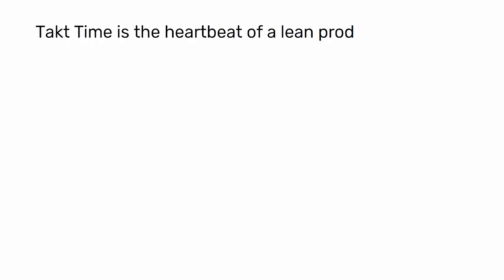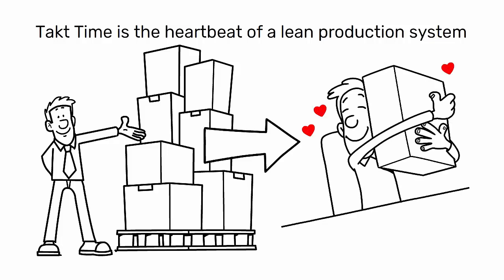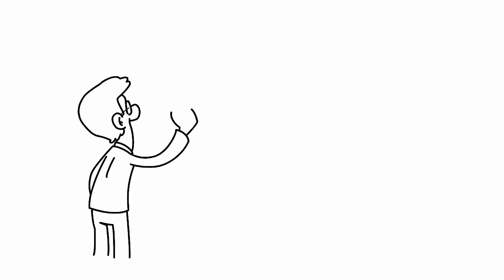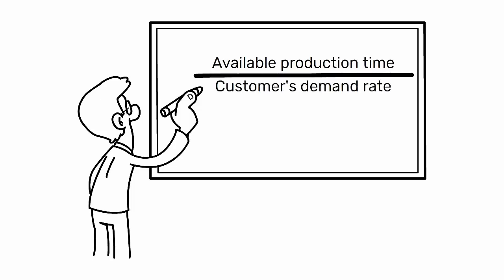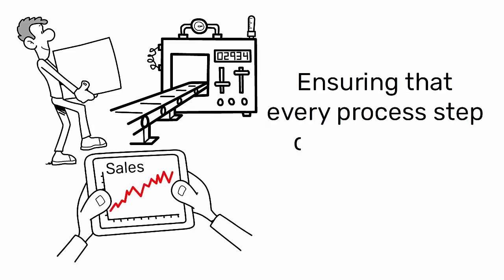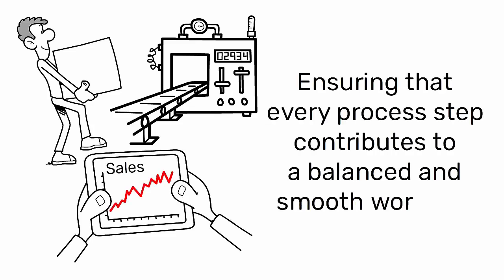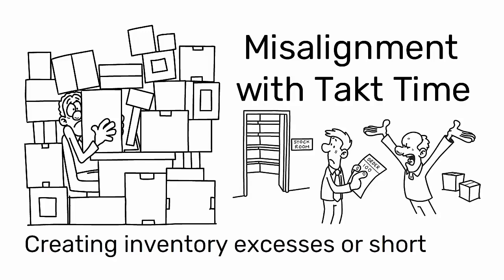Takt Time and its impact on capacity. Takt Time is the heartbeat of a lean production system, dictating the pace at which products must be completed to satisfy customer demand. It is calculated by dividing the available production time by the customer's demand rate. Takt Time is critical for aligning production with sales, ensuring that every process step contributes to a balanced and smooth workflow. Misalignment with Takt Time can lead to overproduction or underproduction, creating inventory excesses or shortages.